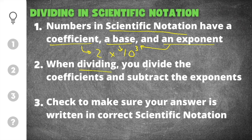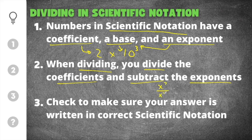When you divide in scientific notation, you divide the coefficients and subtract the exponents. Dividing the coefficients is just like dividing any normal number. Subtracting the exponents is like using the quotient rule for exponents — for example, x to the 7th divided by x to the 3rd gives x to the 7 minus 3, which is x to the 4th power. This rule is the same for dividing in scientific notation.